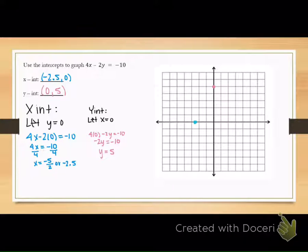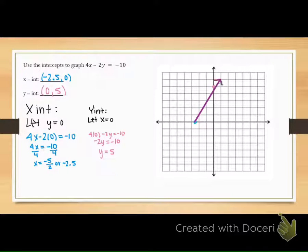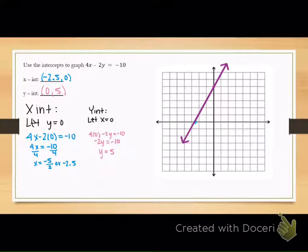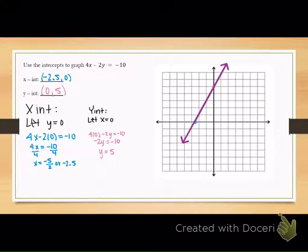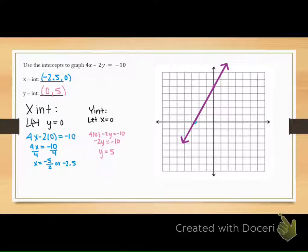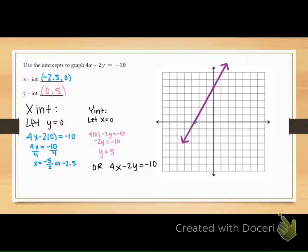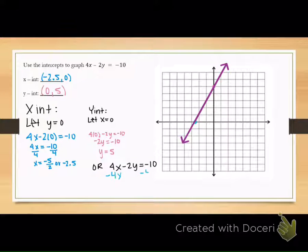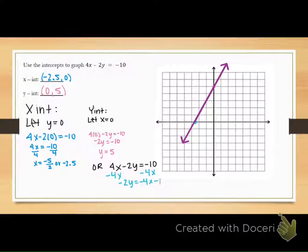Negative 2.5 is halfway between 2 and 3, then just connect them with your straight edge. But what if it had been like 2 thirds or 2 fifths? Doesn't it get a little bit harder? Notice the y-intercept is a whole number. In y equals mx plus b, your b-value would be 5. So in this case it might even be better to just put this into slope-intercept form because of that decimal, making it an easier one to graph.